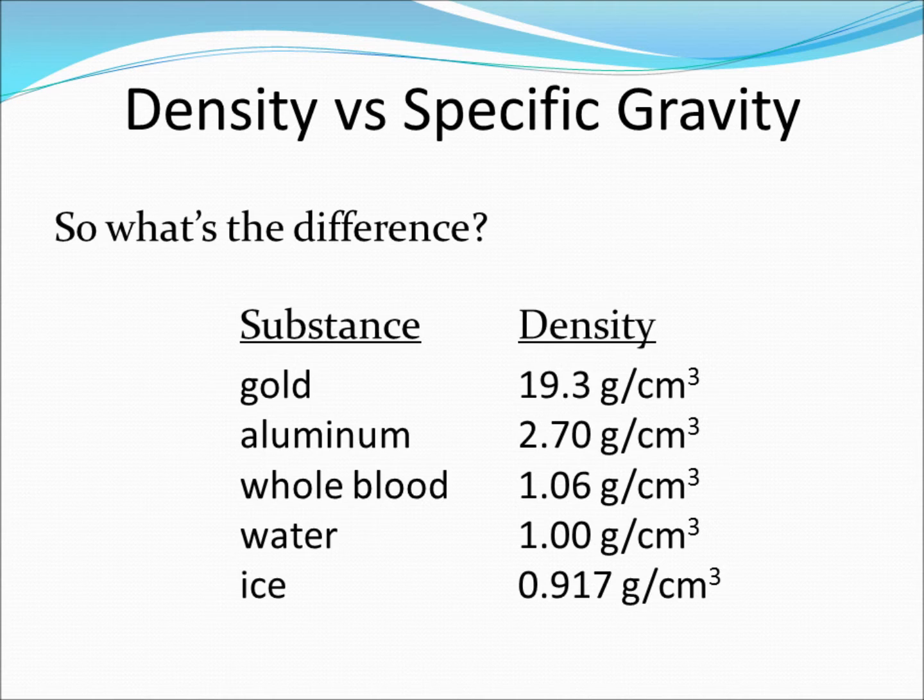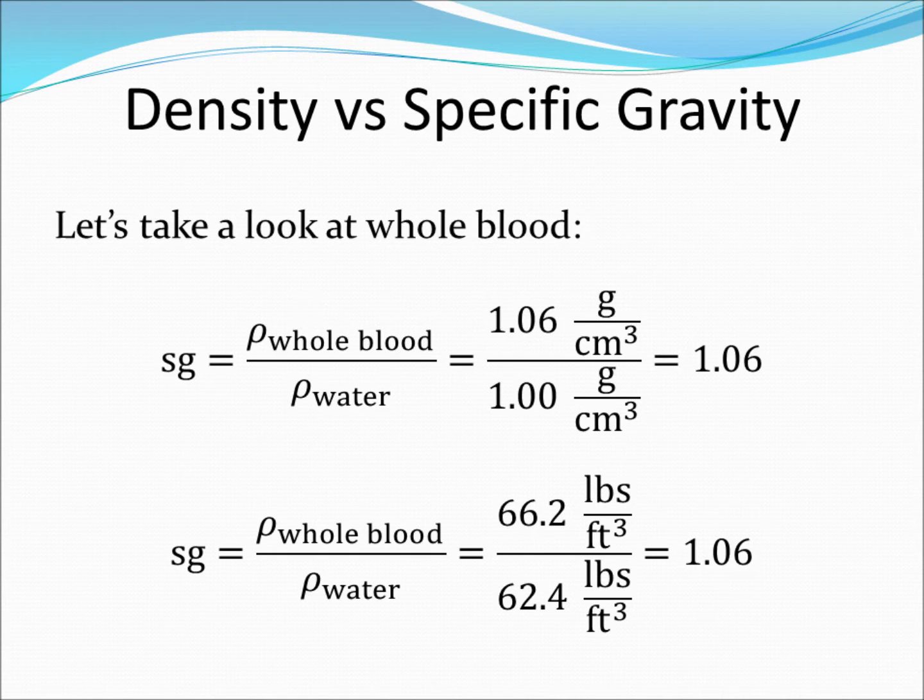Now let's calculate the specific gravity of whole blood. We see that its density is 1.06 grams per cubic centimeter. If we divide that by the density of water, 1.00 grams per cubic centimeter, we get a value of 1.06 for the specific gravity of whole blood.